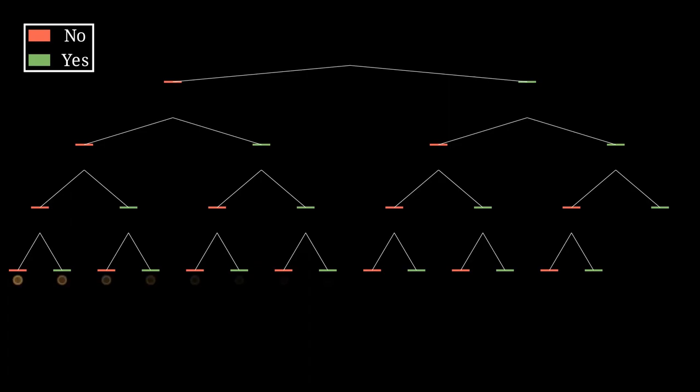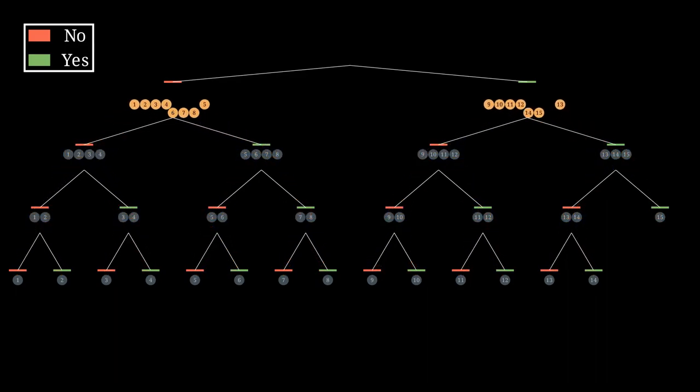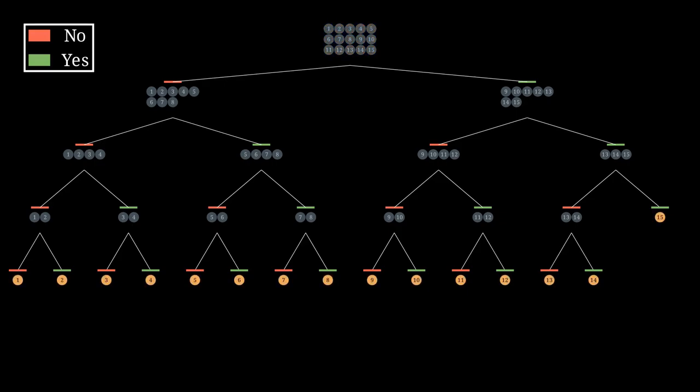We know what the leaves are going to be, so we'll fill those in, and then we can build the rest of the content of the tree from the bottom up. Finally, for each node, we can fill in a question that would create the correct split. What we have here is the best possible 20 question strategy for 15 items. We know we can guarantee a win in 4 questions because no path of the tree is longer than 4 jumps.